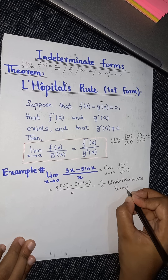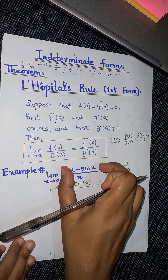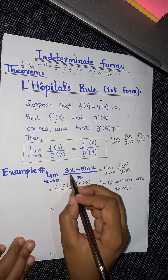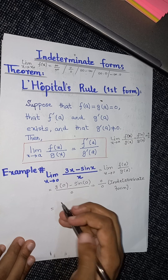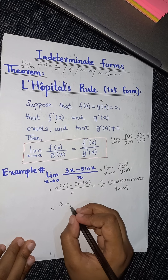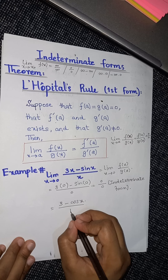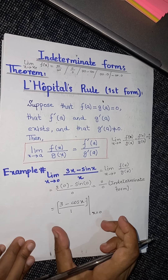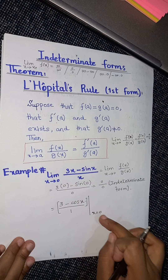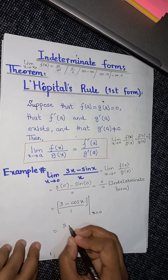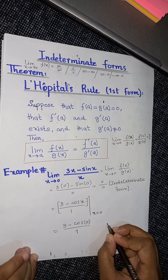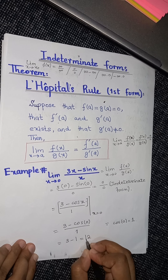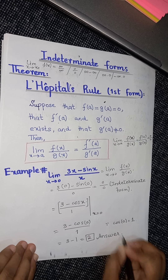Since it is indeterminate, the next step is to take the derivative of the numerator and the denominator. The derivative of 3x is 3 (the constant factors out and the derivative of x is 1), and the derivative of sin x is cos x. The derivative of x in the denominator is 1. Evaluating at x = 0, we get (3 minus cos 0) divided by 1. Since cos(0) = 1, we get 3 minus 1, which equals 2. This is our required answer.